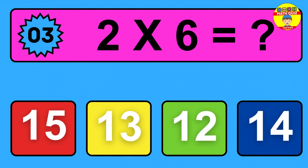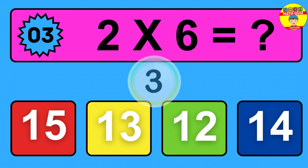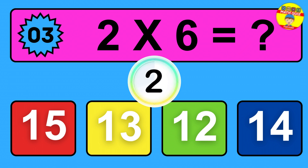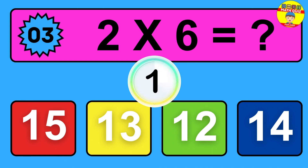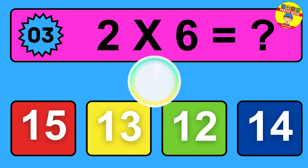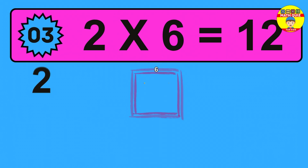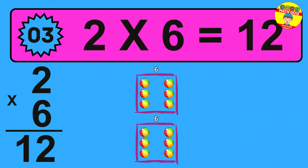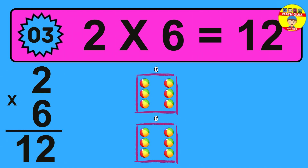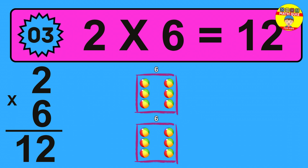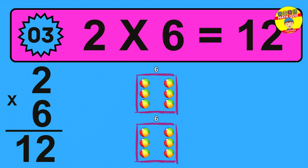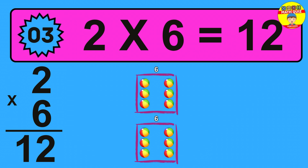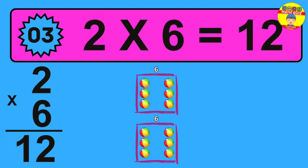Question 3: 2 times 6 equals what? The answer is 2 times 6 is 12. To calculate, we have 2 groups with 6 balls each one. So how many balls do we have? 12 balls.